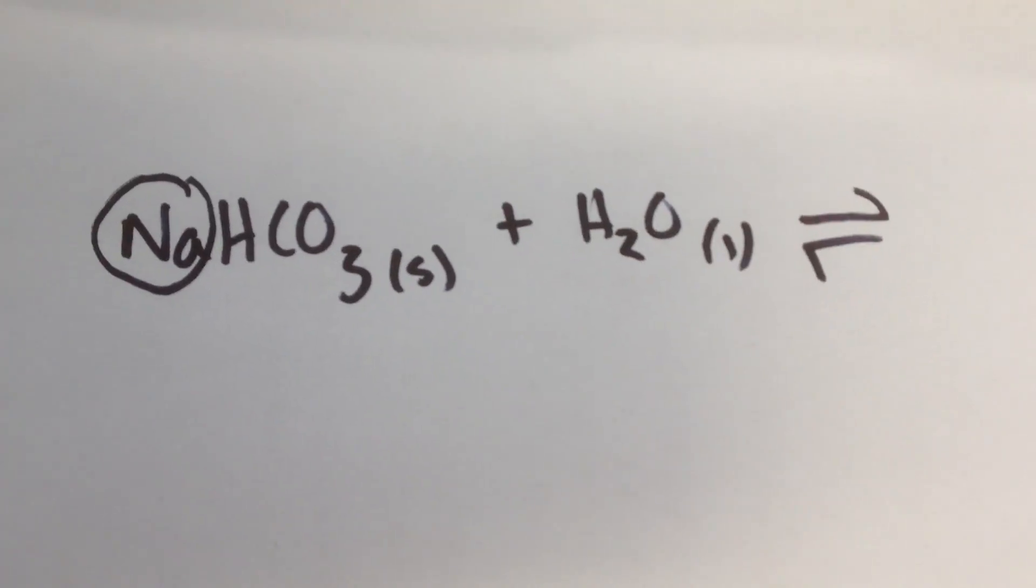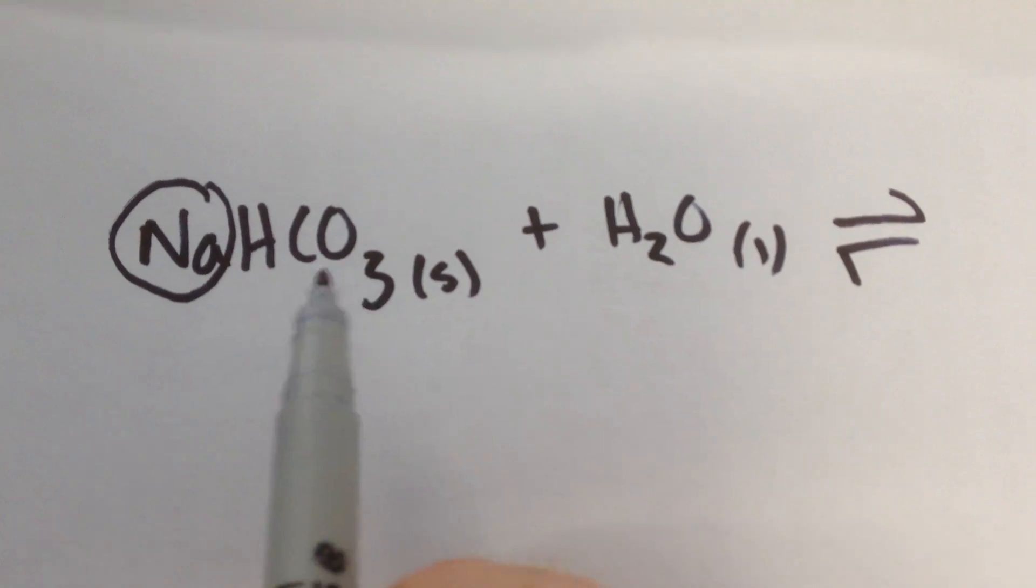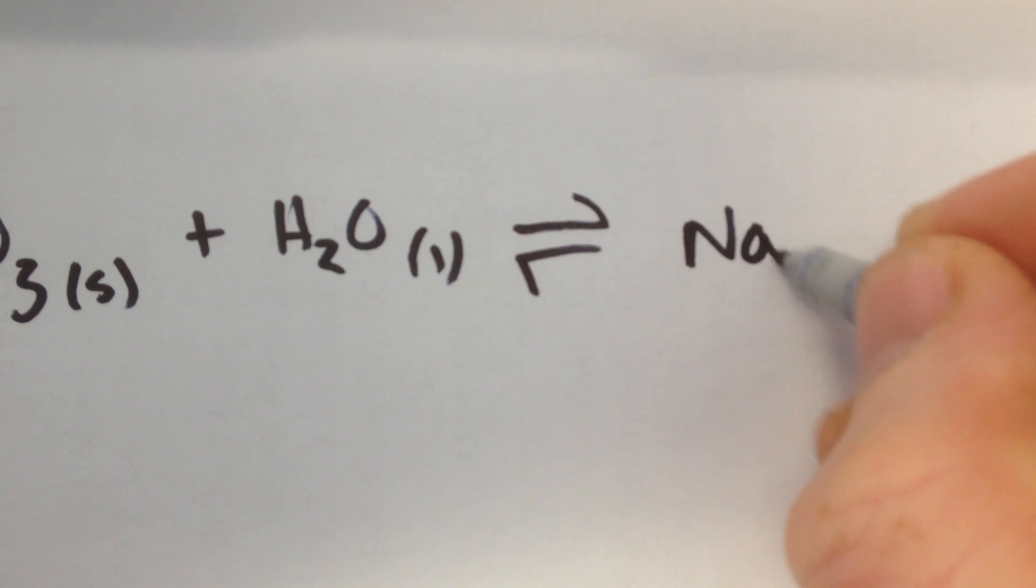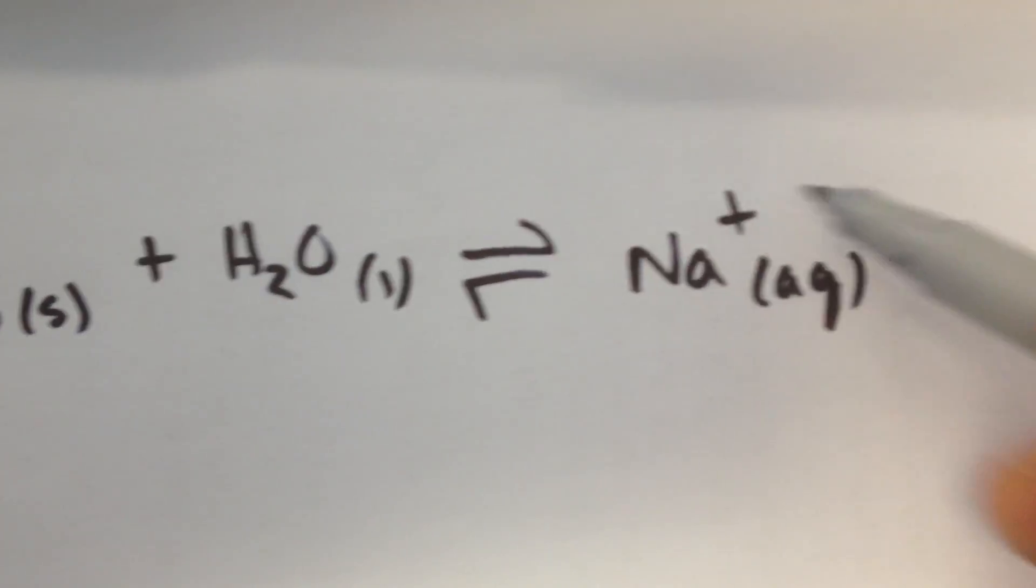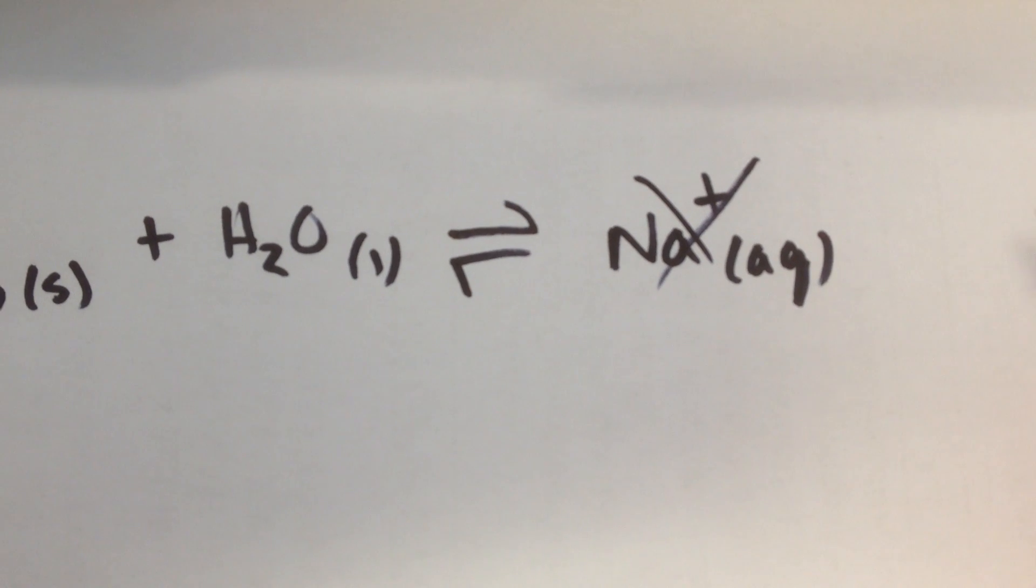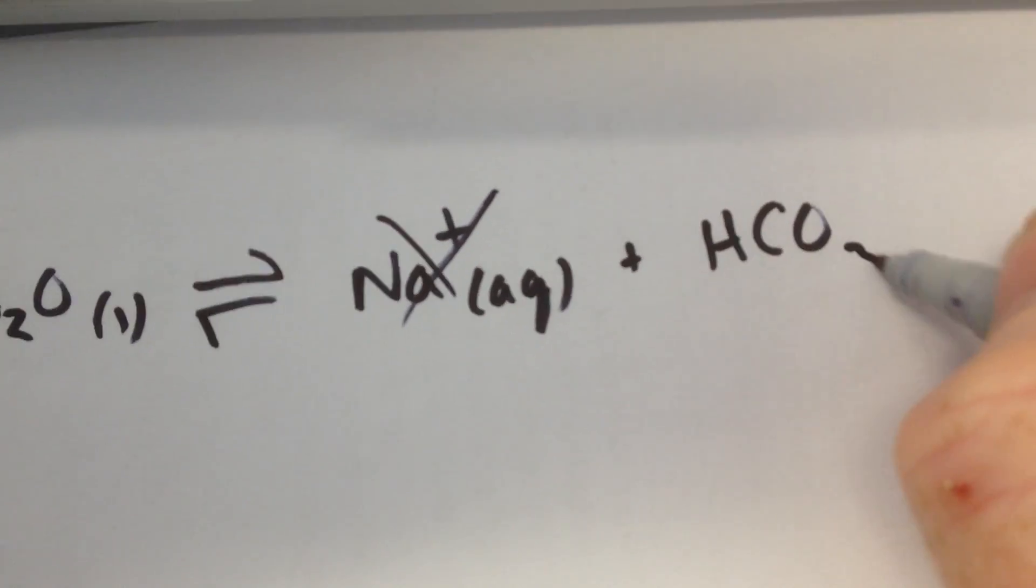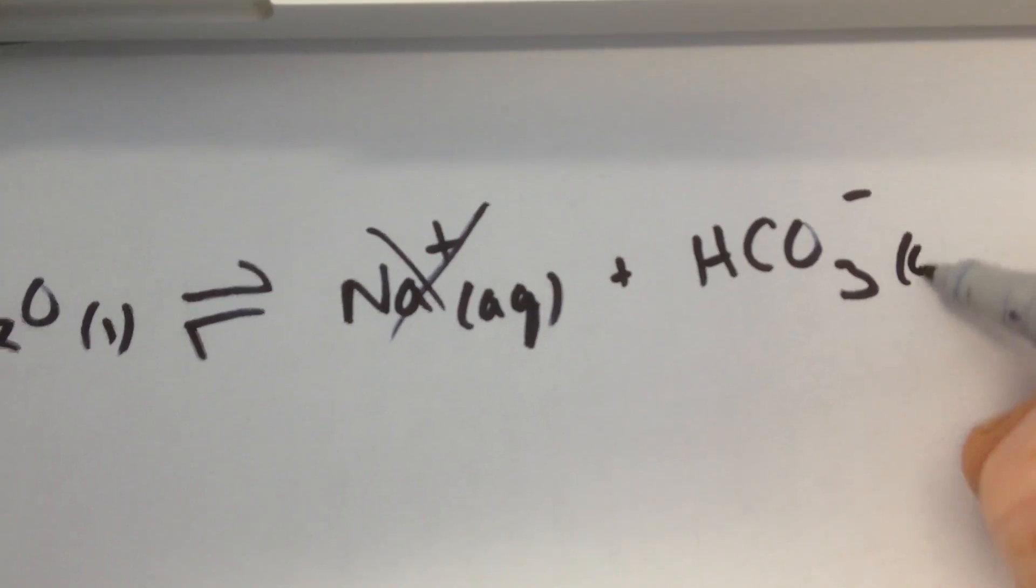just like you'd get in the ocean. And I'm then left with hydrogen carbonate. So let's draw that. I end up with sodium ions, aqueous, which I can now forget about because they don't further react with water. And I'm left with hydrogen carbonate, which is a polyatomic ion in solution.